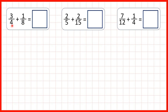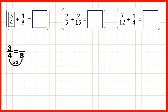First we have three quarters plus one eighth. Eight is in the four times table, so we can find a fraction equivalent to three quarters which has a denominator of eight. We can use multiplication to find equivalent fractions: four times two is eight, and what we do to the denominator we need to do to the numerator as well, so three times two is six.